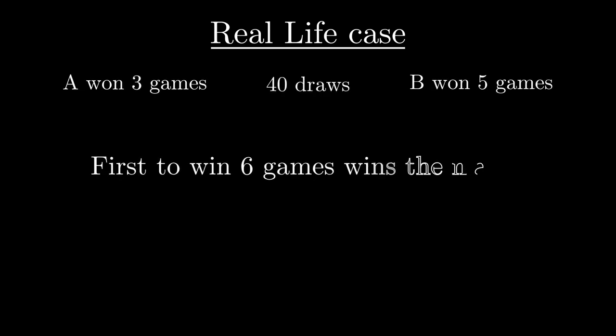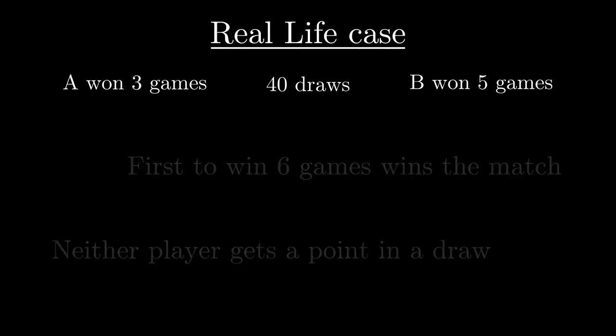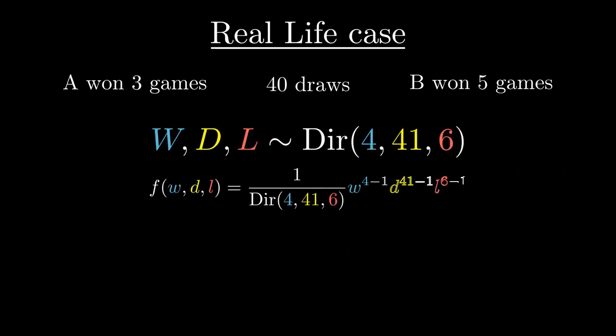Very rarely in professional sports do matches get interrupted midway. Let's consider such a situation where player A won 3 games, player B won 5 games, with 40 draws between them when the match was interrupted. Neither player gets a point in case of a draw, and the first to win 6 games takes the match. Let's calculate the probability of either player winning the match, based on what we have seen so far. Given the history of the match, we know that the random variables W, D, L representing player A's winning, drawing and losing probabilities, follow the Dirichlet distribution with parameters 4, 41, and 6.